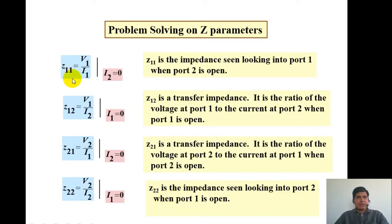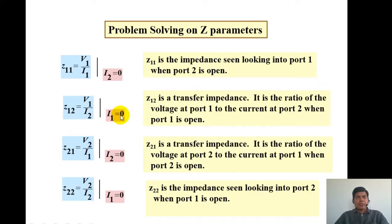We can see that Z11 and Z21 share the same condition: I2 equals 0. So Z11 and Z21 are both calculated when port 2 is open-circuited. Similarly, Z12 and Z22 are both calculated when port 1 is open-circuited. Now we will take some examples of Z-parameter calculation and find these four parameters one by one.